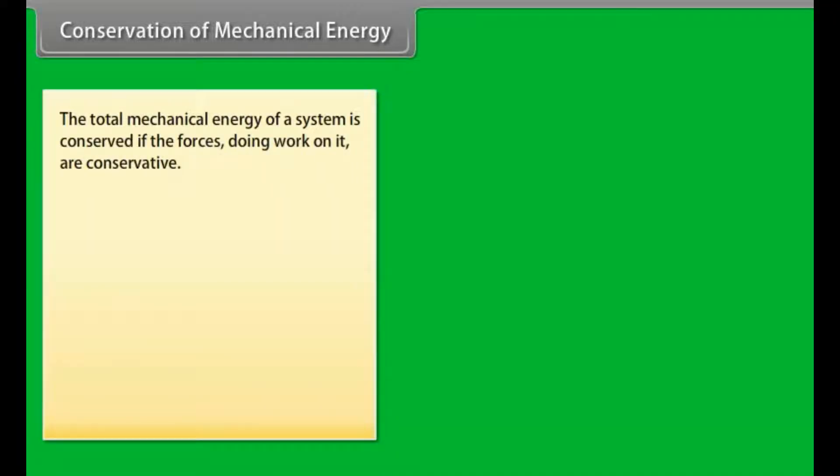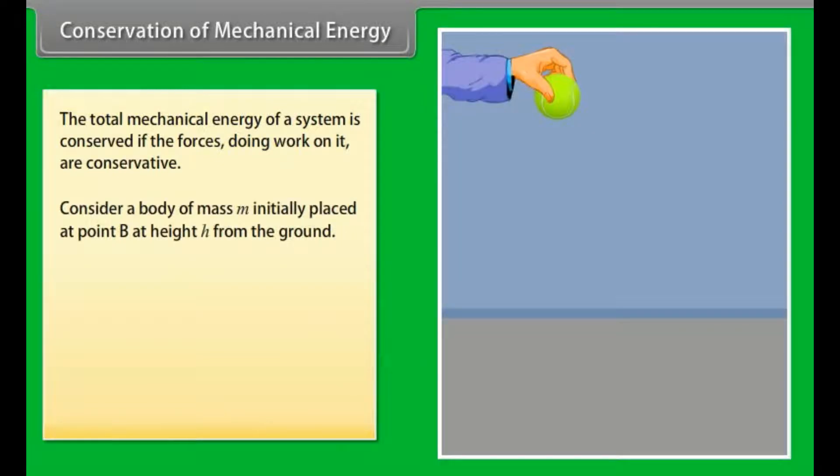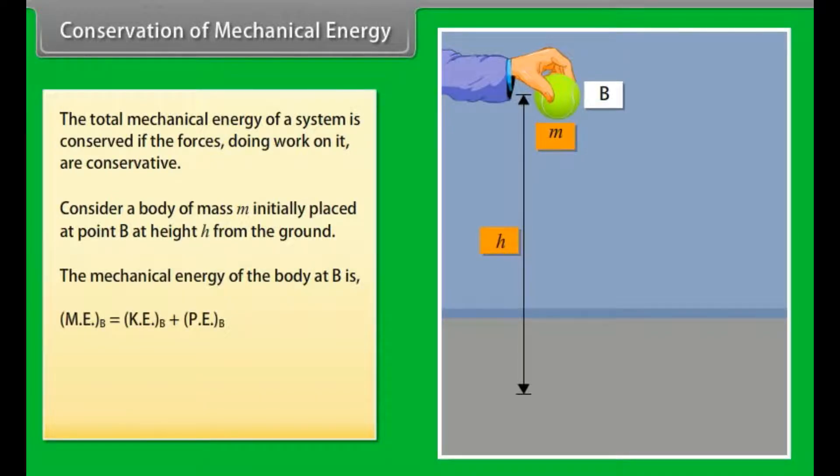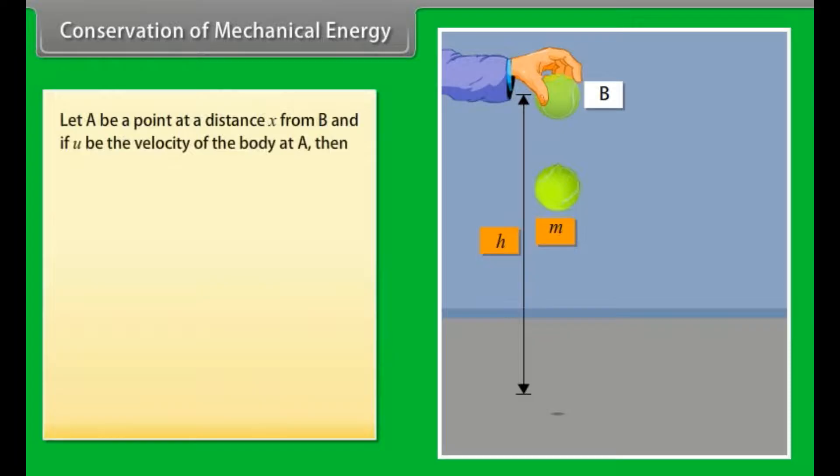Conservation of mechanical energy. The principle of conservation of total mechanical energy states that the total mechanical energy of a system is conserved if the forces doing work on it are conservative. Let us understand it with an example. Consider a body of mass m initially placed at point B at height h from the ground. The mechanical energy of the body at B is mechanical energy at B = kinetic energy at B + potential energy at B = 0 + mgh = mgh.